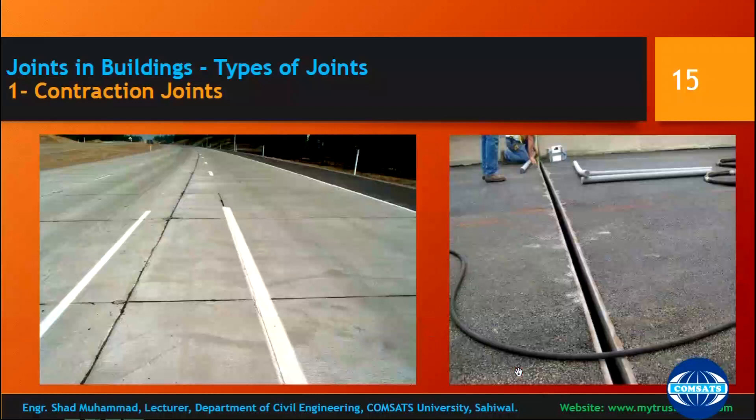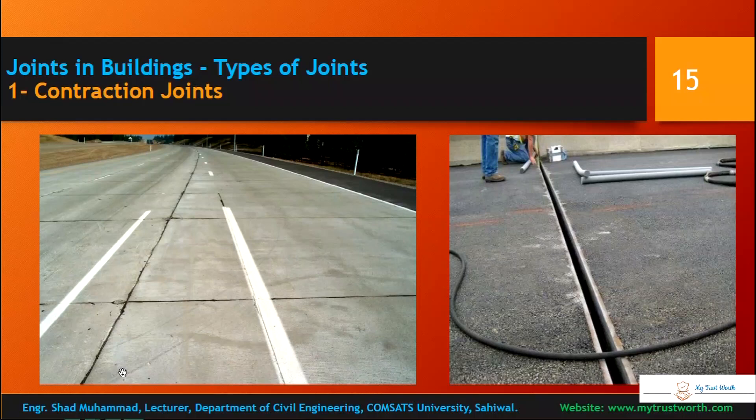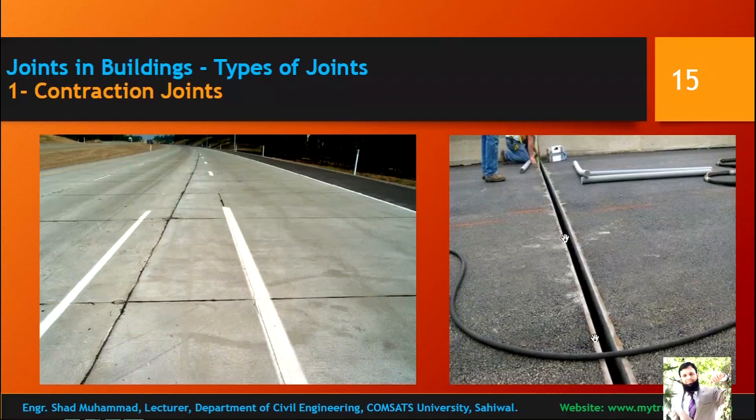Contraction joints are also used on roads and flyovers — you can see the separation between sections. There is a visible separation in these structures, similar to what is observed at construction joints in buildings.